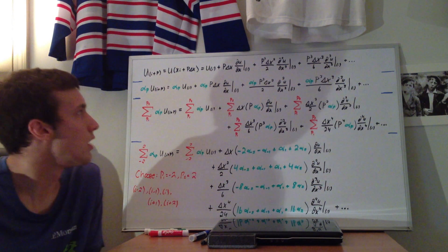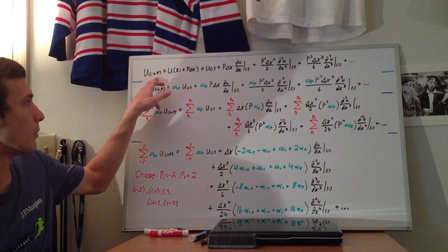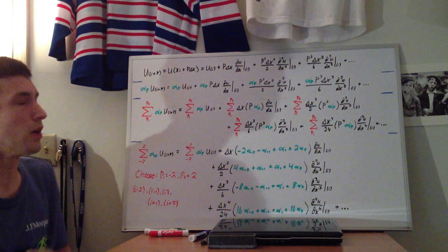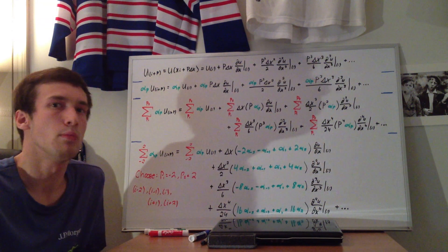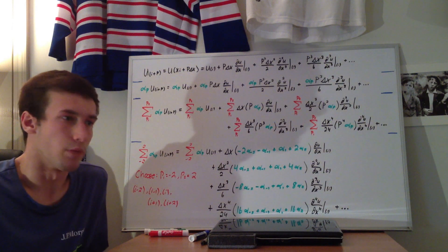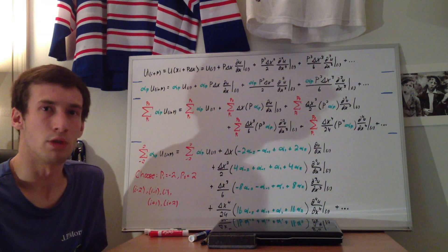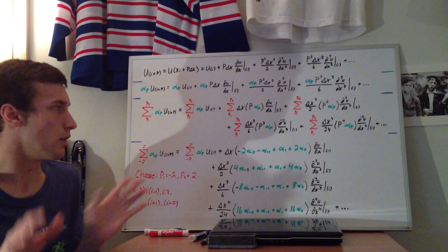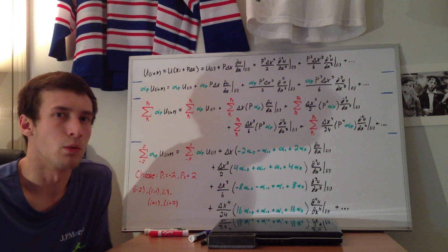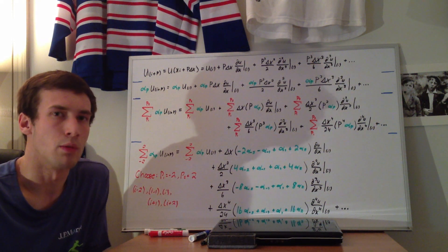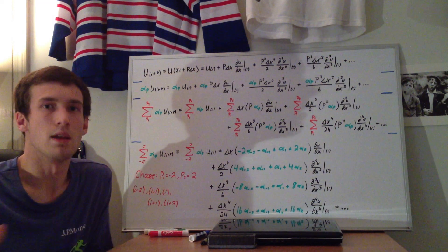In this one, we're going to start with a Taylor series approximation of a point u_{i+p}. So p can be any point — it can be negative 100, and that will be your i minus 100 node. But just to keep it simple, we can say it's like an i minus 2, i minus 1, i, i plus 1, and i plus 2. So p can be any number.